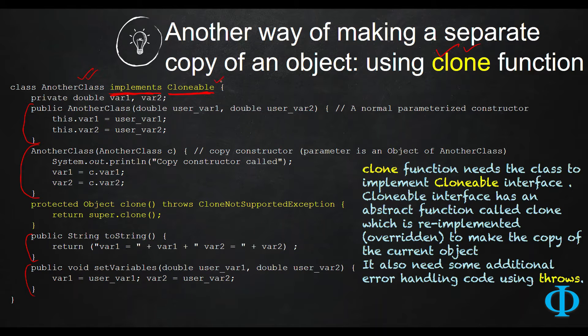This Cloneable interface basically has an abstract function called clone that you need to reimplement in your class. This part is showing you the syntax for how to reimplement the clone interface to make a copy.